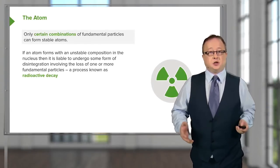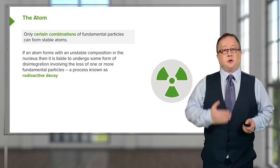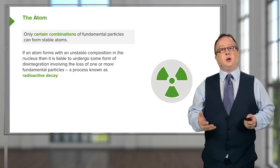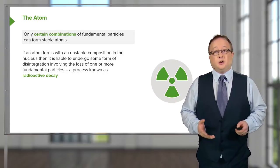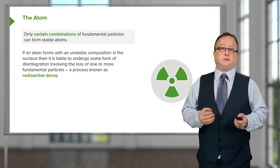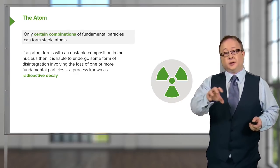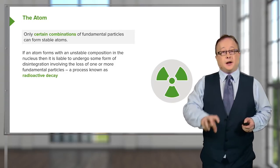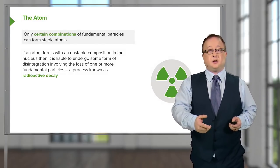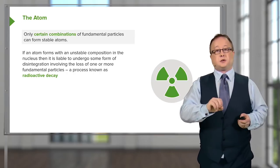Only certain combinations of fundamental particles can form stable atoms. It's important to be aware of the existence of isotopes. You have probably heard of the term radioactive isotope — this is where you have an unstable configuration of protons and neutrons within the nucleus that are liable to undergo a disintegration involving the loss of one of these fundamental particles, and it is the nucleus that decays. Isotopes are elements which have the same chemical characteristics but a different number of neutrons within the nucleus.